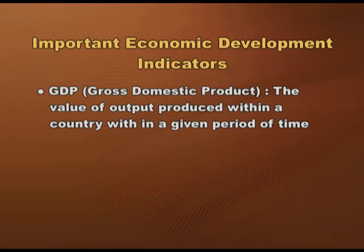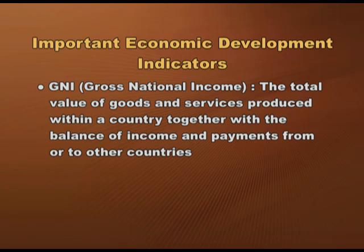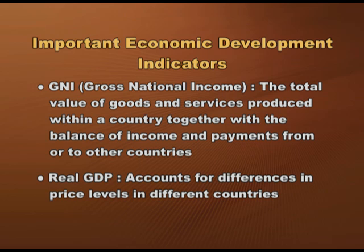Development brings both qualitative and quantitative changes in the economy. Various indicators are used to assess the status of economic development of a country. Some important economic indicators are: first, GDP (gross domestic product), which is the value of output produced within a country in a given period; GDP per capita is the distribution of GDP per head, accounting for population size. Second, GNI (gross national income), which is the total value of goods and services produced within a country together with the balance of income and payments from or to other countries. We also consider real GDP, which accounts for differences in price levels across countries.